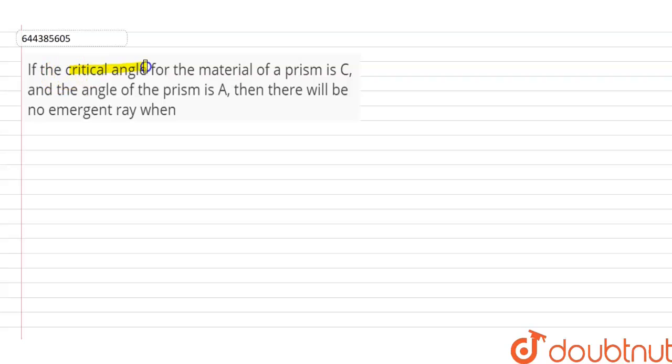If the critical angle for the material of a prism is C and the angle of the prism is A, then there will be no emergent ray when: The two plane surfaces of the prism are called refracting faces and the angle between two refracting faces is called angle of the prism A.